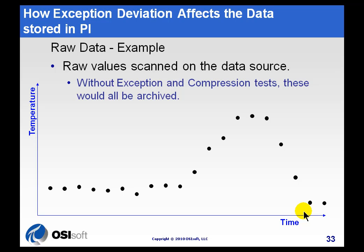We start with the exception test. The exception test works something like this: we take raw data and don't bring it all in — we just bring in those values that go outside a certain dead band. If we didn't do this, what you would see is something that looks just like this. As you can see in this simple trend, these are very minor things like line noise, and these are probably things that even ProcessBook can ignore. This line noise is probably something you can ignore, so the exception test is going to remove those values.